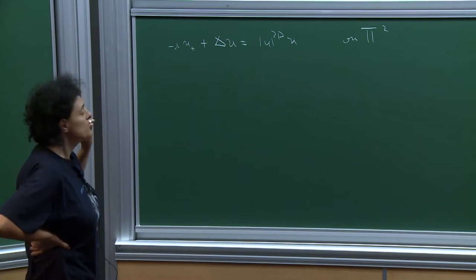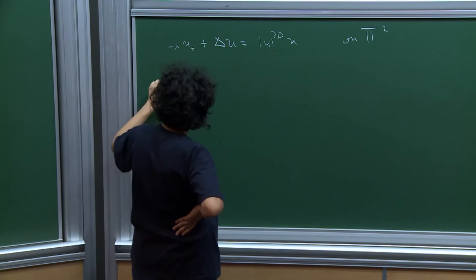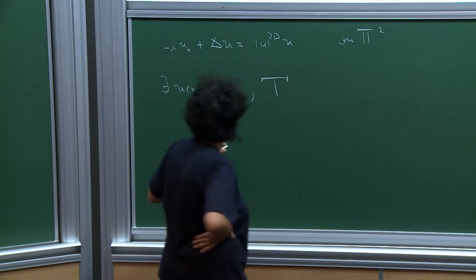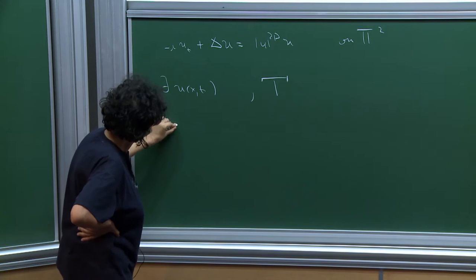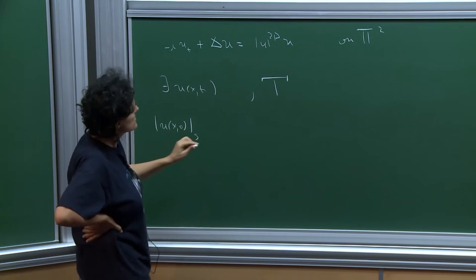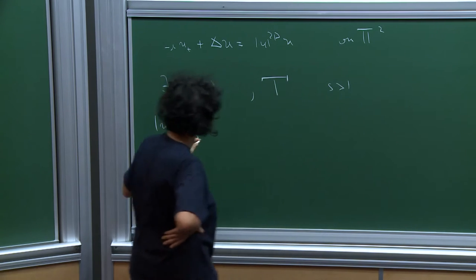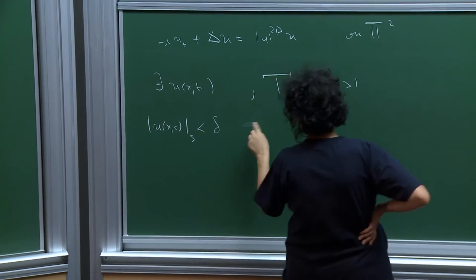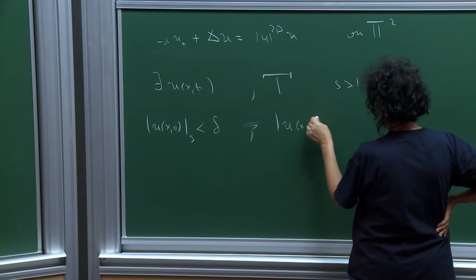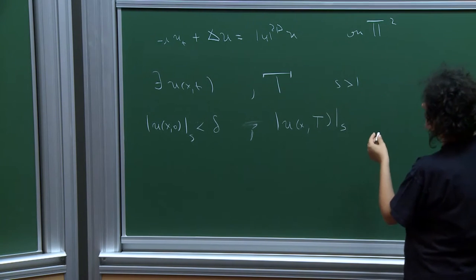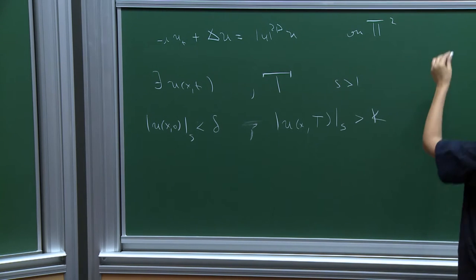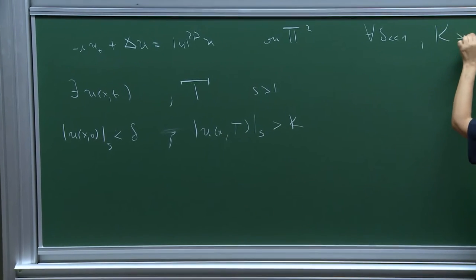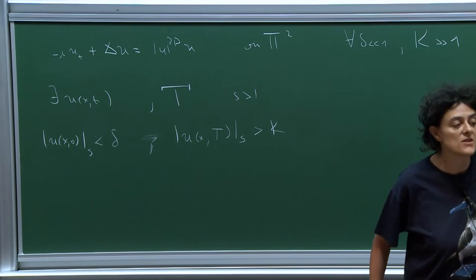The problem is to find a solution and a large time T such that the initial datum in Hs norm — where I'm taking s larger than 1 for my result — is very small, and instead the datum at time T is very large. My statement is that for all delta small and k large, I can play this game.